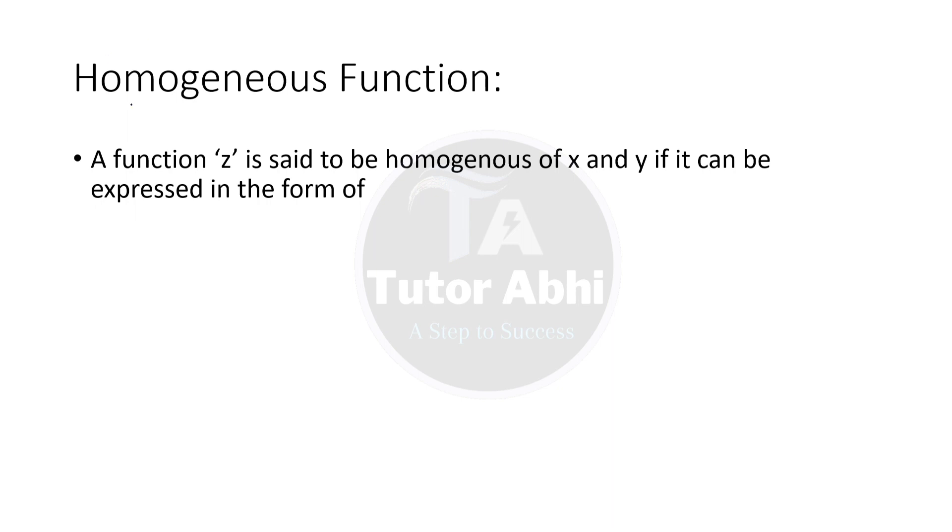First of all, what is a homogeneous function? A function z is said to be homogeneous of x and y if it can be expressed in the form of x to the power n times function of y upon x. So here we have a term, homogeneous of x and y. When the equation contains one or more variables dependent, we say it's homogeneous of x and y.